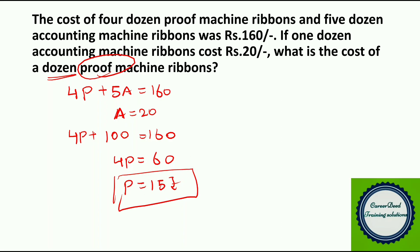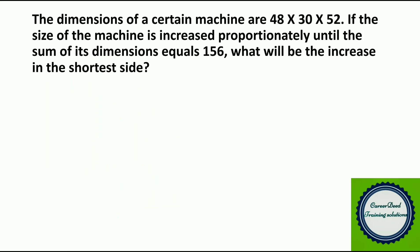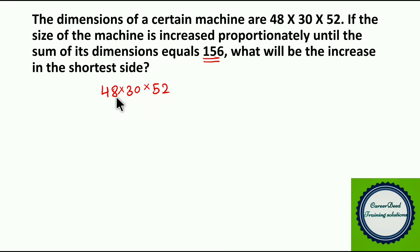Moving to question number 11. The dimensions of a certain mason are 48 by 30 by 52. If the size of the mason is increased proportionally until the sum of its dimensions equals 156, what will be the increase in the shortest side? Initially, 48 plus 30 plus 52 = 130. We are increasing it to 156, so the total increase is 26. The initial ratio of dimensions is 24:15:26.